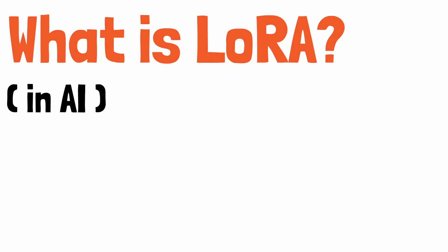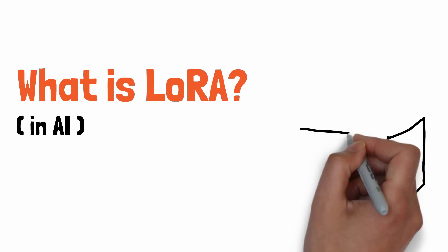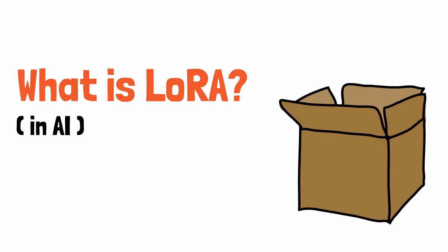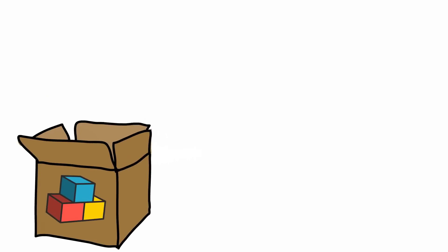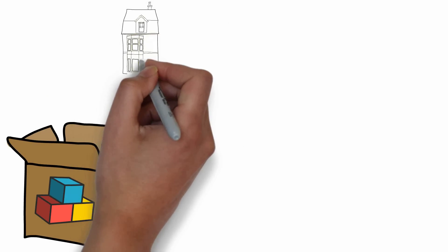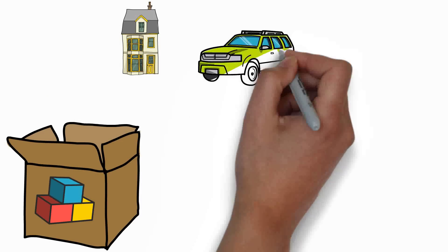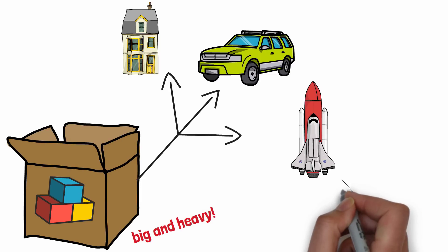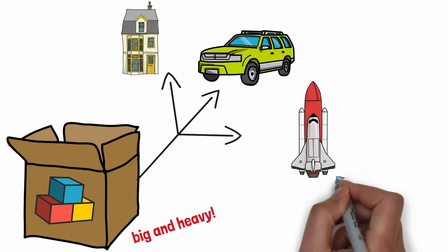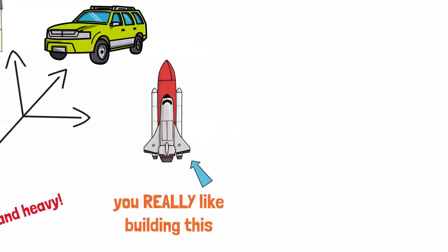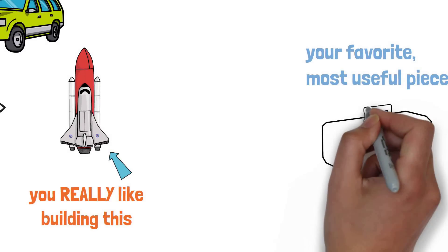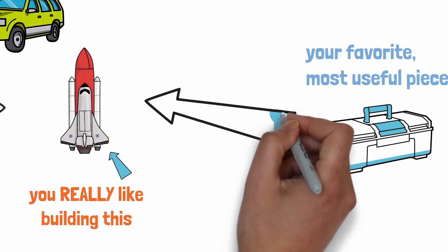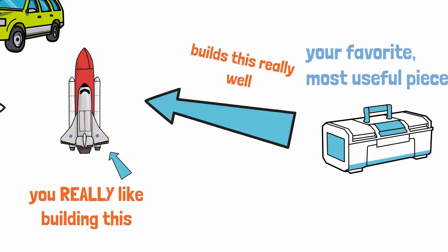What is LoRA in AI? You may have heard of a concept called LoRA, referring to AI and large language models. Imagine you have a giant box of Legos — you can build all kinds of things: houses, cars, spaceships. But it's so big and heavy that it's hard to carry around, and most of the time you don't need all these Legos to build what you want. So instead, you build a smaller box of your favorite, most useful Legos. This smaller box is easier to carry around, and you can still build most of the things that you want.